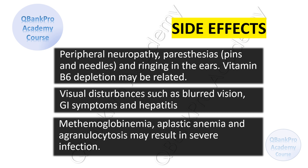Patients should be informed about possible side effects of isoniazid, including peripheral neuropathy, paresthesias, or pins and needles, and ringing in the ears. Vitamin B6 depletion may be related. Visual disturbances such as blurred vision, GI symptoms, and hepatitis are also possible. Methemoglobinemia, aplastic anemia, and agranulocytosis may result in severe infection.